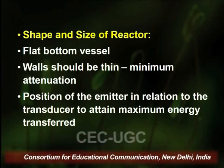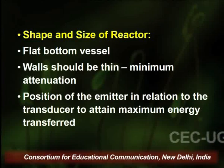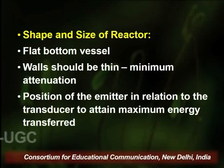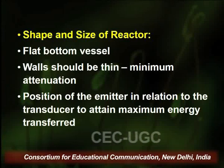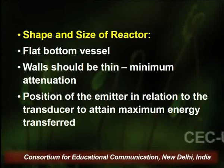Regarding the shape and size of the reactor: flat-bottom vessels are better for ultrasound effects. The reactor walls should be thin to reduce attenuation of ultrasound waves. The position of the emitter with respect to the transducer also impacts extraction efficiency, especially in bath sonicators. Placing the extraction vessel away from the transducer reduces extraction yield because ultrasound waves attenuate before reaching the vessel. Placing the vessel near or directly above the transducer gives better results.